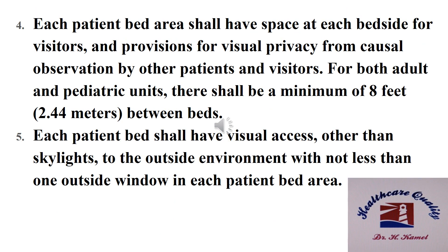Provision four: each patient bed area shall have space at each bedside for visitors and provisions for visual privacy from casual observation by other patients and visitors. For both adult and pediatric units, there shall be a minimum of two and a half meters between beds. Provision five: each patient bed shall have visual access, other than skylights, to the outside environment, with not less than one outside window in each patient bed area.